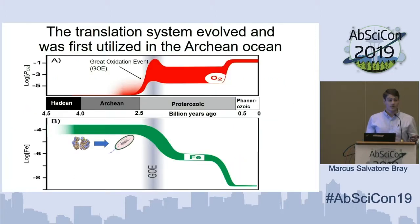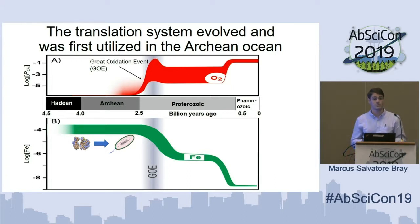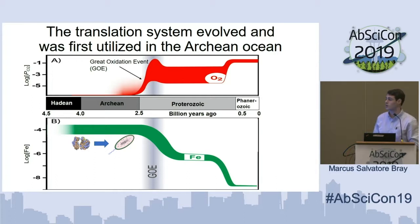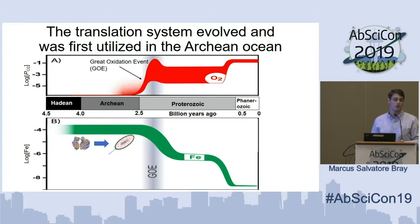The ribosome is very ancient and very conserved, so much so that it likely predates the last universal common ancestor and even cellular life itself. If we think about the origin of the ribosome, that really puts it at around 4 billion years ago at the beginning of the Archean. The ribosome evolved in an environment where the atmosphere was devoid of oxygen, and because of that you had abundant, stable, soluble ferrous iron in the environments on the early Earth.